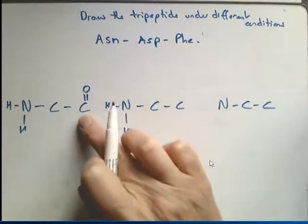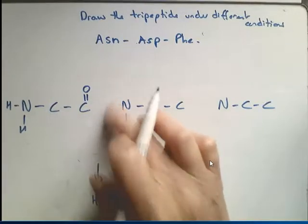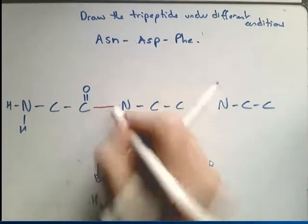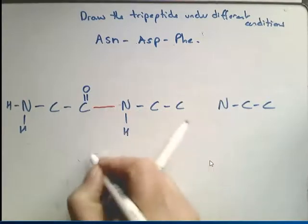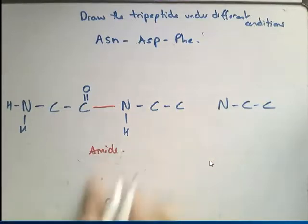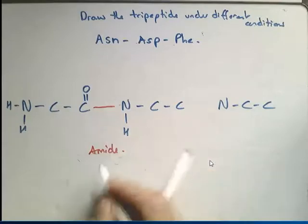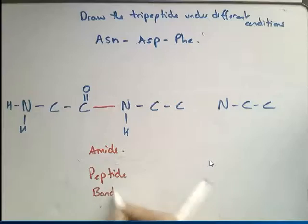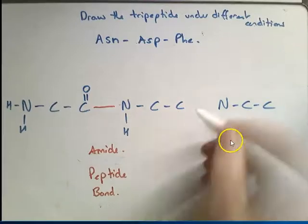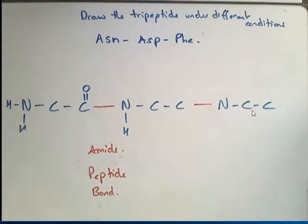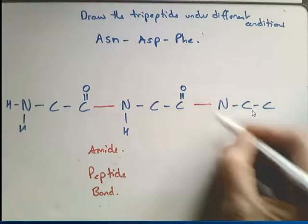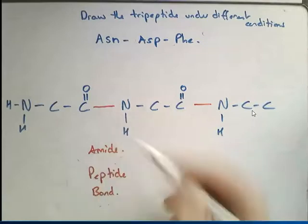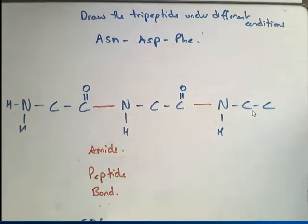These two are going to bond together and make a water molecule. We get rid of the OH from here and the H from here, and that's our peptide bond. It's an amide bond, but because it's formed between amino acids it's called a peptide bond. It makes a water molecule each time you join amino acids, giving: C-O-N-H repeating.